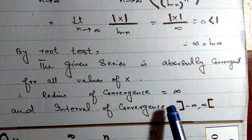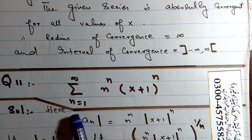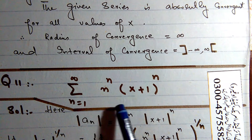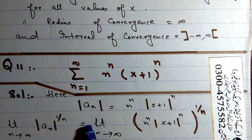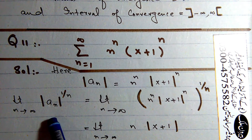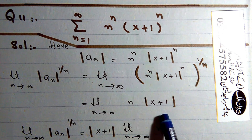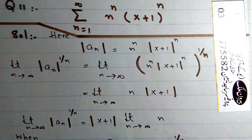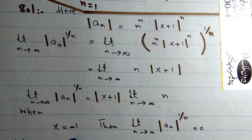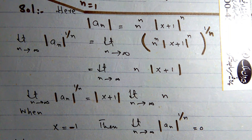Next series: summation n^n · (x+1)^n. We take the absolute value |n^n · (x+1)^n| and apply the root test: limit as n approaches infinity of |n · (x+1)|.